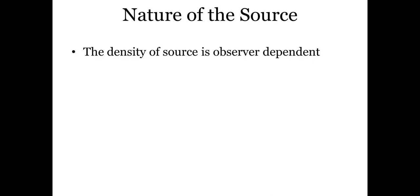Let's talk about the nature of the source. The density of the source is, of course, observer dependent. That means you choose a frame — you establish an inertial frame in your vicinity and observe a system in nature. The observation of one inertial observer will be different from the observation of another inertial observer, especially the observation of density, because that depends on the observer.